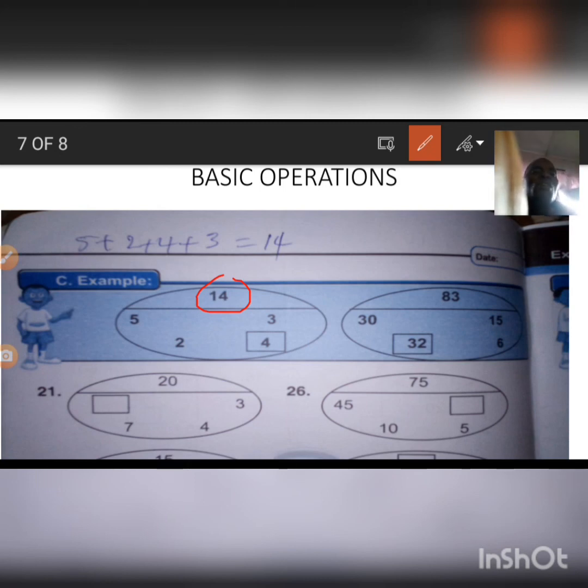So to get any of the numbers at the bottom, all we need to do is to simply subtract the numbers at the bottom from the number on top, and that will give us, for example, to get this 4, you subtract 5, 2, and 3 from 14, and that gives you the 4. So when we apply this method to all the other questions, we are going to get the correct answers.